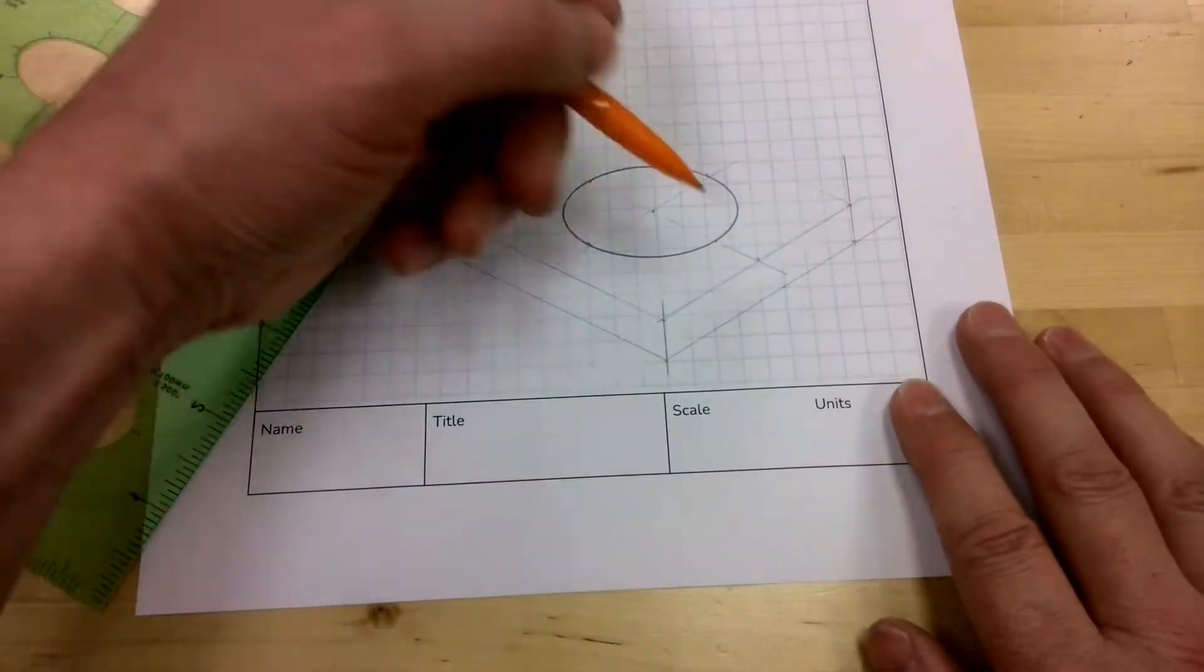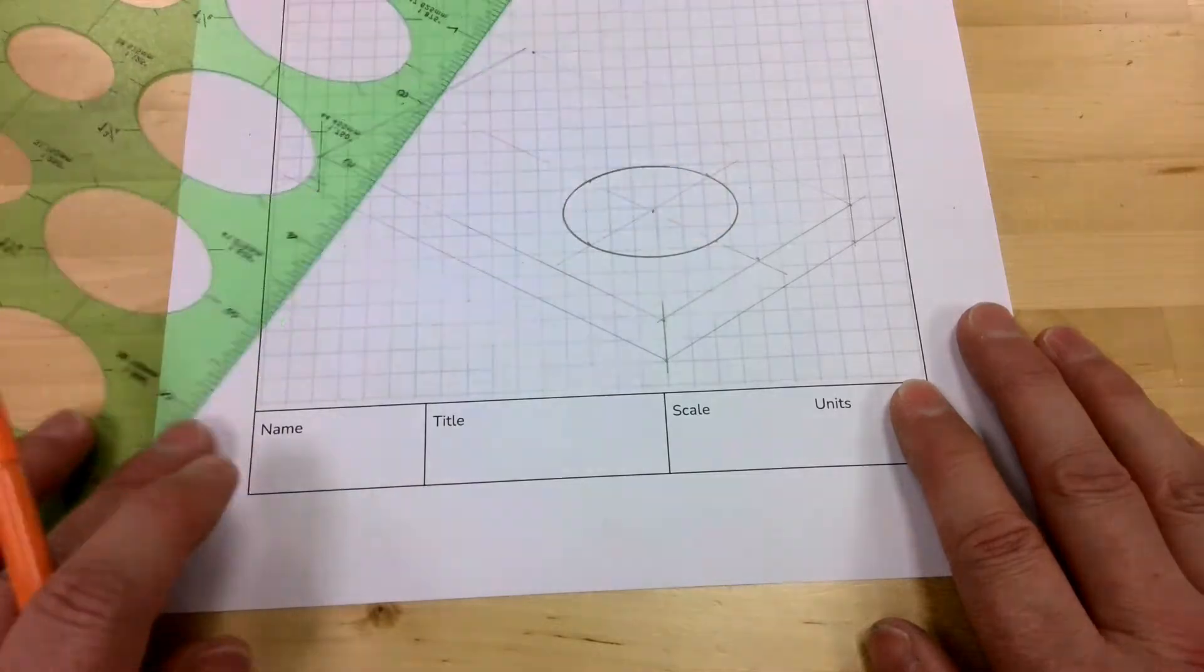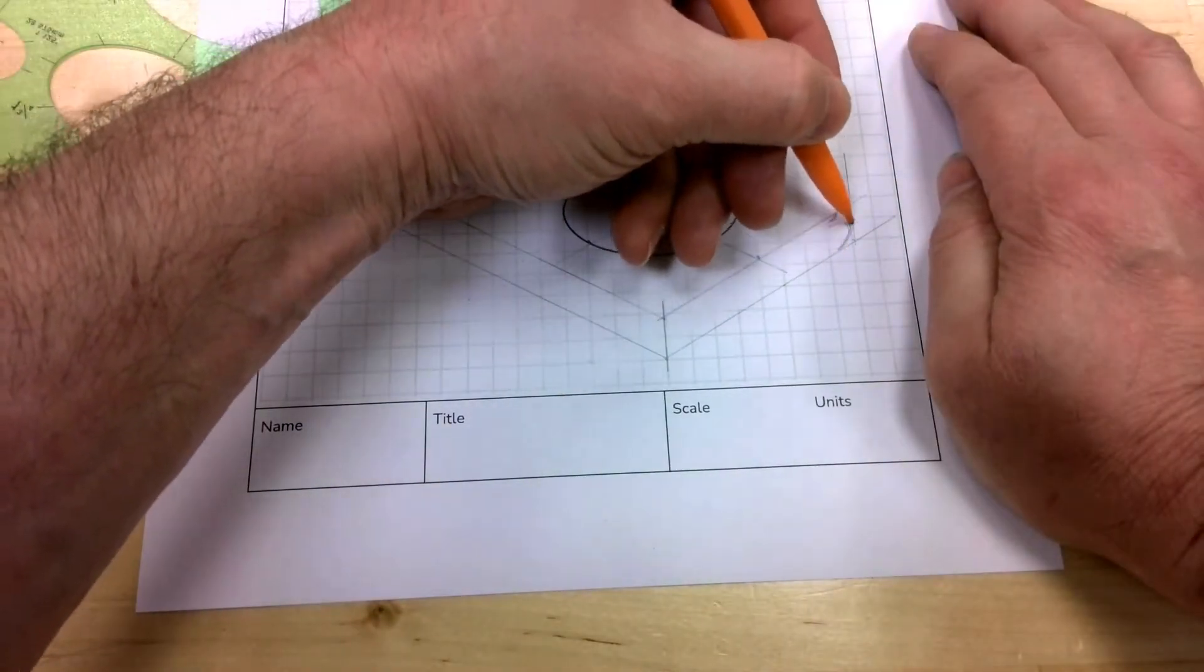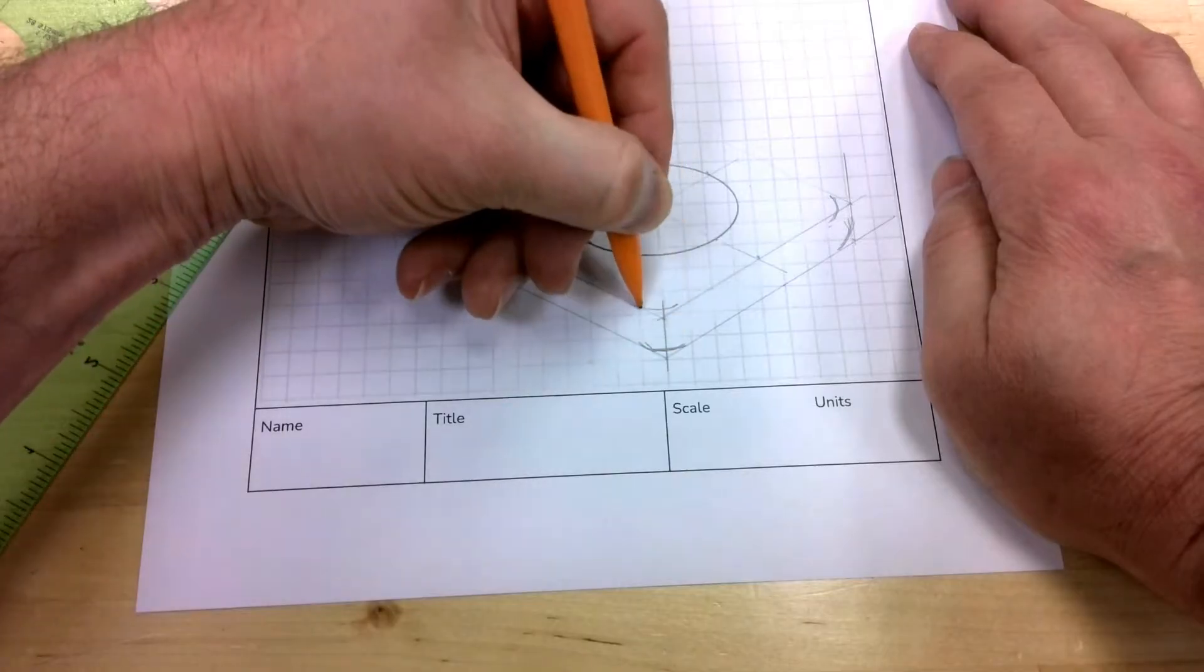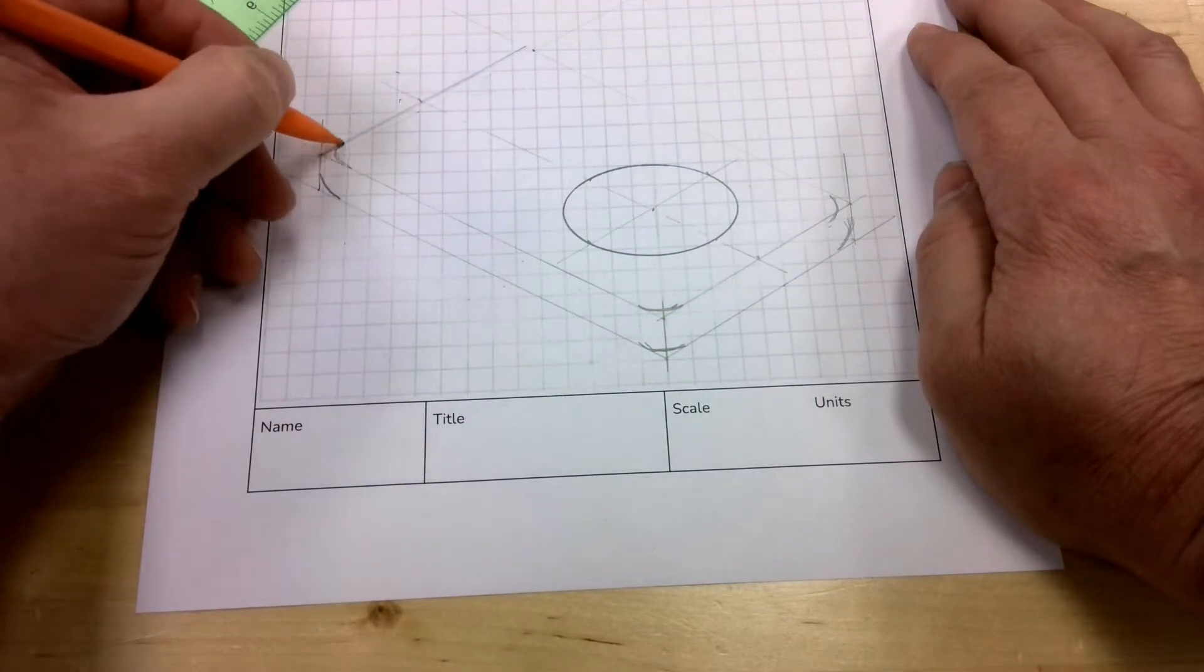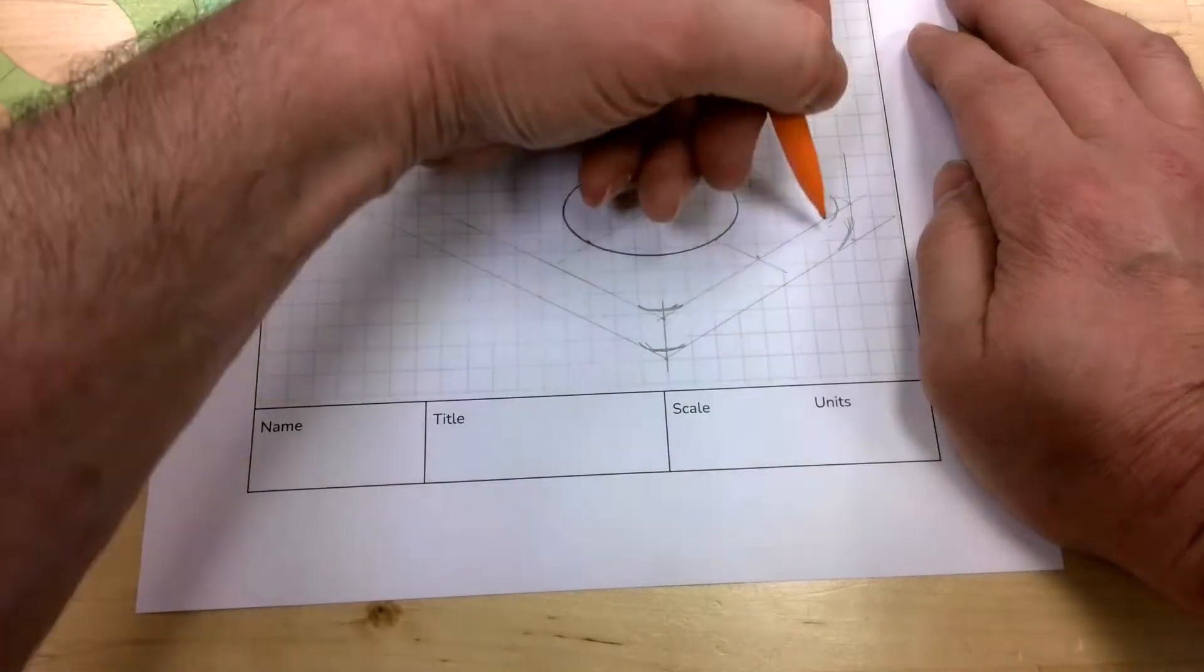Another technique would be to just note the points and then sketch in the corners like we did on the previous example. Now I'll start adding in curves for the other details. One technique is to do the top curves first and then sketch them down so you can see where the bottom curve becomes tangent.